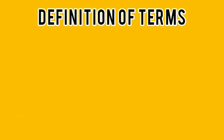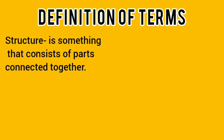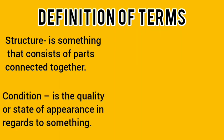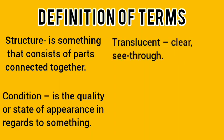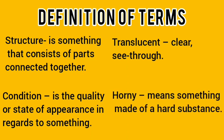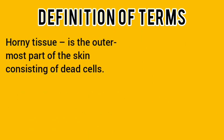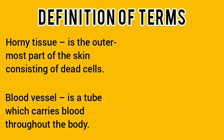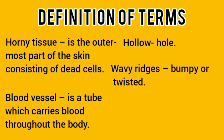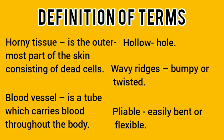Let's have a definition of terms. Structure is something that consists of parts connected together. Condition is the quality or state of appearance in regards to something. Translucent means clear or see-through. Horny means something made of a hard substance; horny tissue is the outermost part of the skin consisting of dead cells. Blood vessel is a tube which carries blood throughout the body. Hollow means whole. Wavy ridges means bumpy or twisted. Pliable means easily bent or flexible.